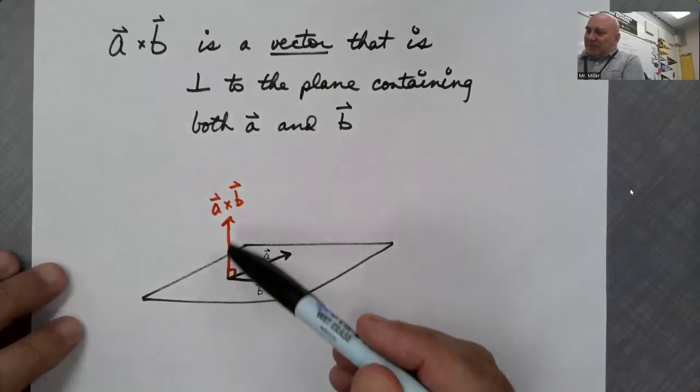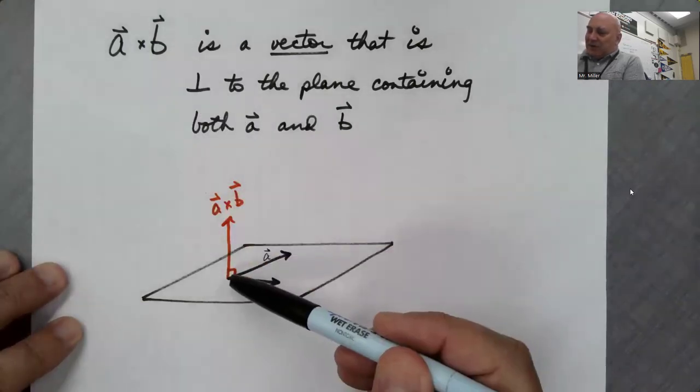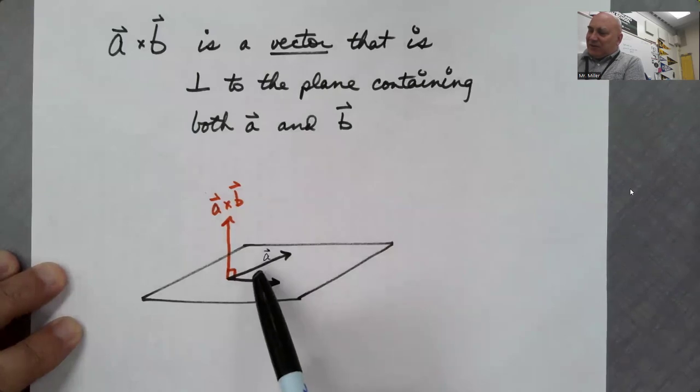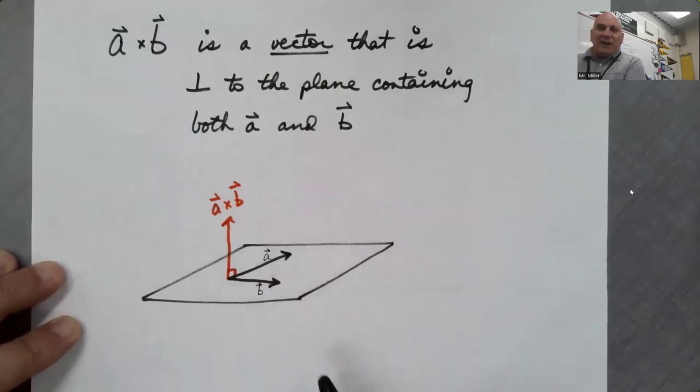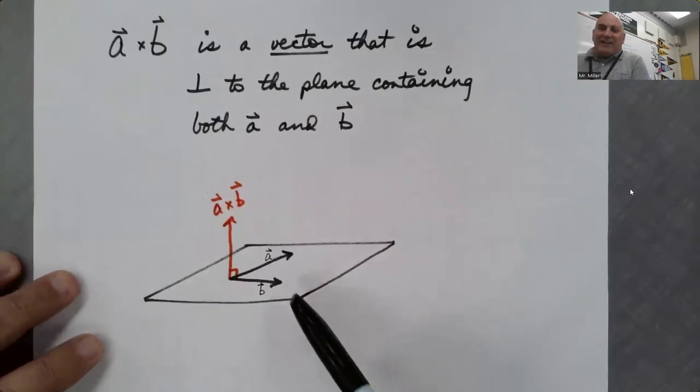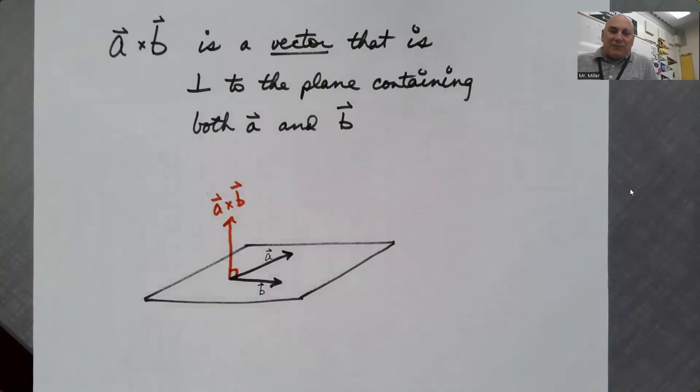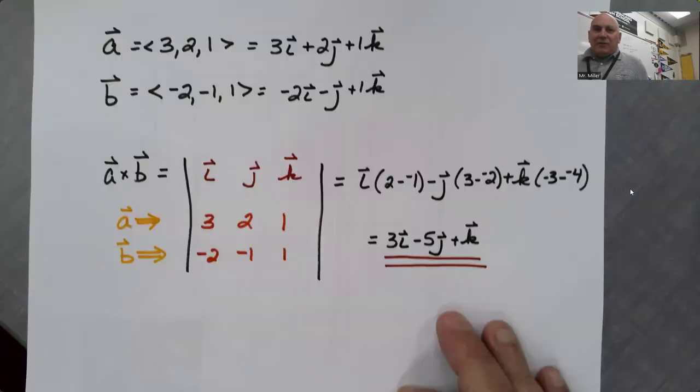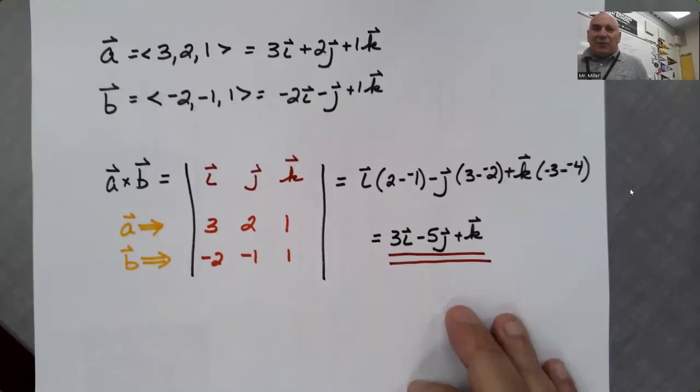But either way, A cross B, the cross product, is going to be a vector that's perpendicular to both original vectors, and it's perpendicular to the plane containing those vectors. This is my shortest video ever, probably,